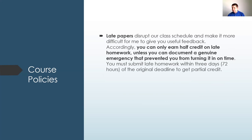In terms of late papers, it would be best to turn everything in on time. For homework assignments, you can earn half credit unless you have a genuine emergency — the sooner you can get in touch with me about that the better. You have 72 hours to submit late homework to get that half credit. And to clarify: if an assignment is worth 20 points and you earned 18 of those points but turned it in late, I take the 10-point late penalty and you get 8 out of 20. So it's better than a zero, but it's a pretty stiff penalty.